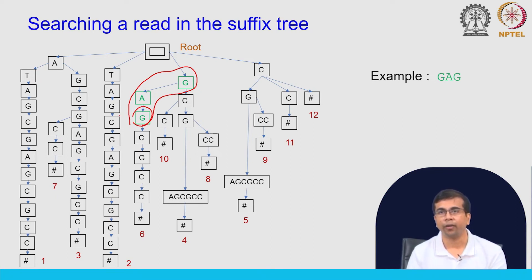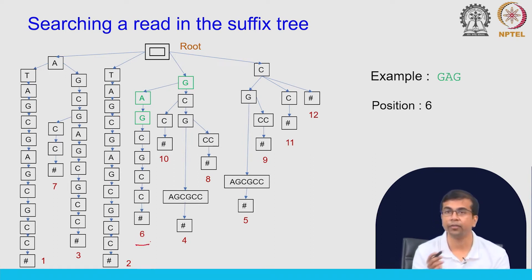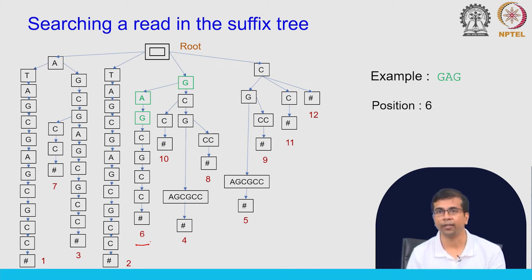Once we have found the match, we can also look at the location — the position is 6. If you go back to the original string, you will see that GAG occurs at position 6 of the reference genome. The search process is very simple.